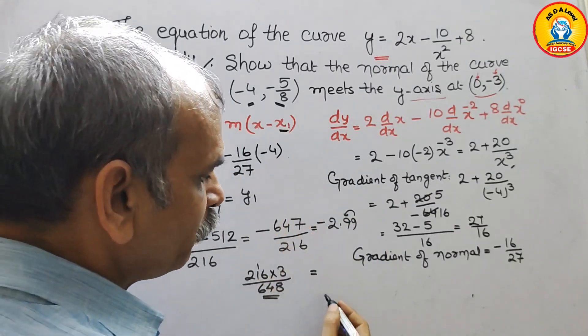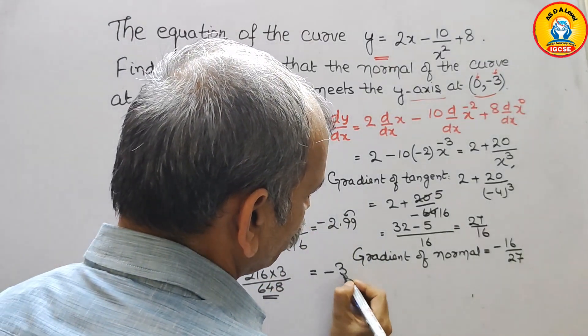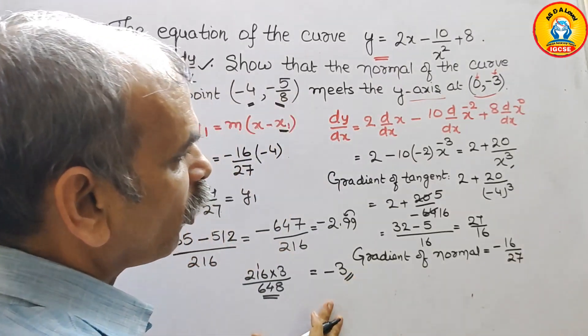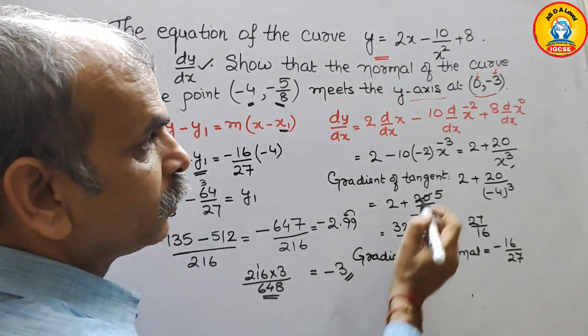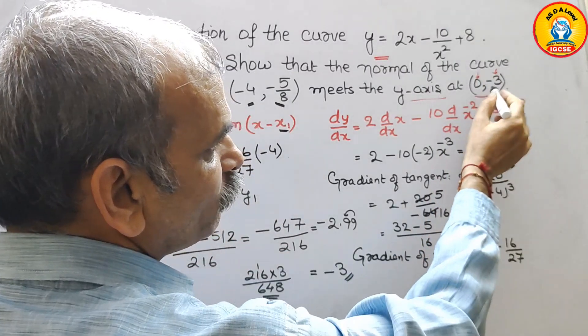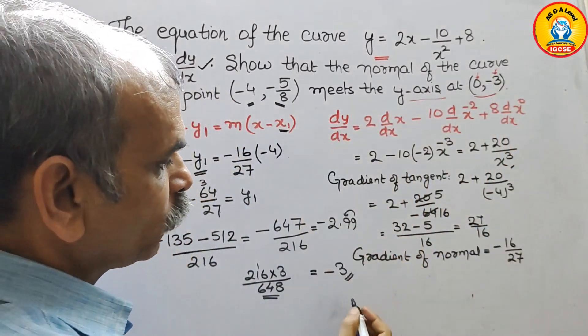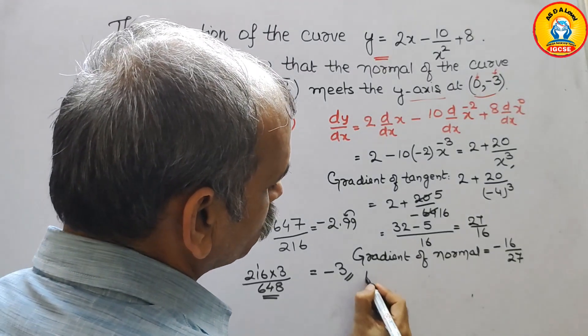So rounding up, it will be minus 3. Therefore your coordinate is 0 comma minus 3, which is what we had to prove. Hence proved.